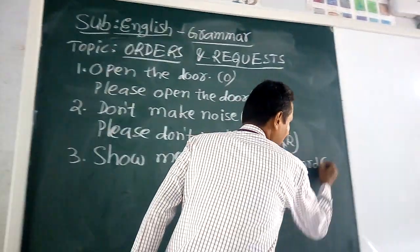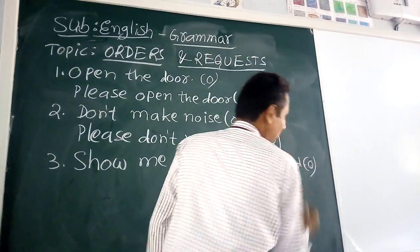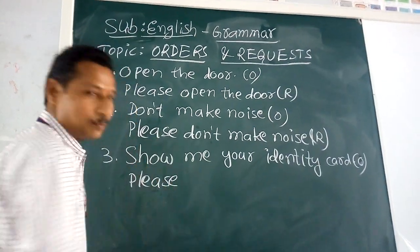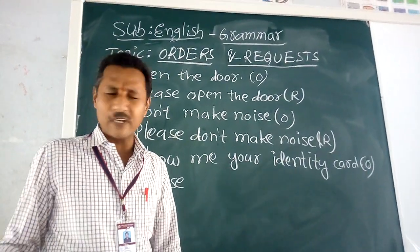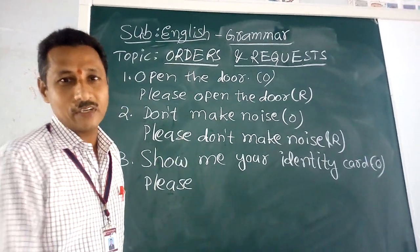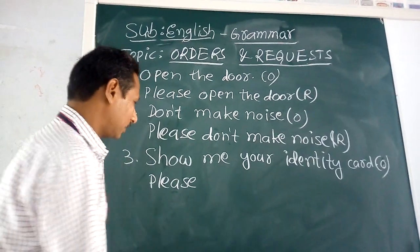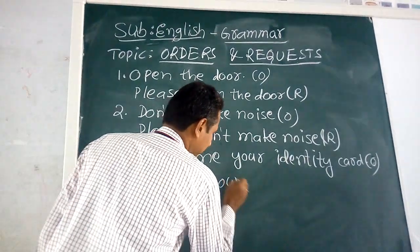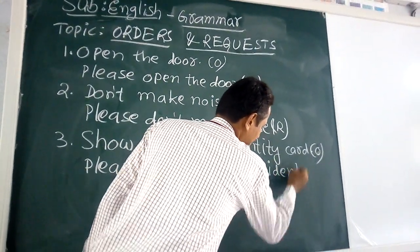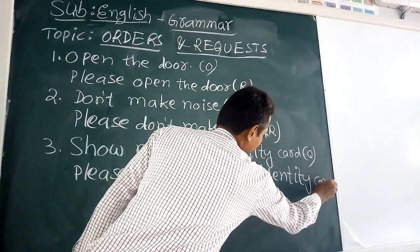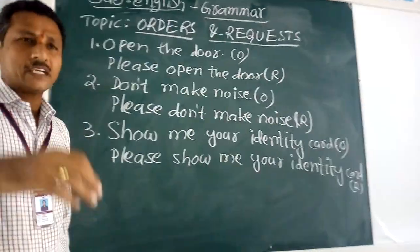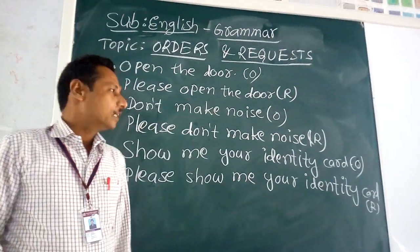So they will add 'please': 'Please show me your identity card.' Immediately, VIPs, elders, or any officials will take it positively and show their identity card. 'Please show me your identity card' — this is a request sentence. Like this, so many sentences we can change and make into request sentences.